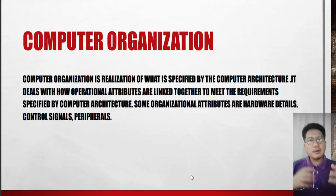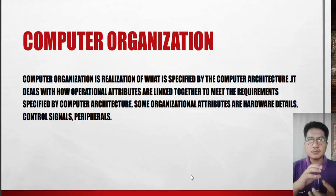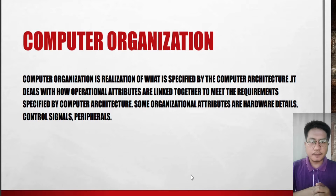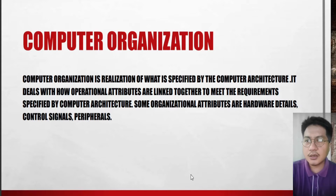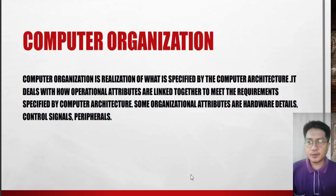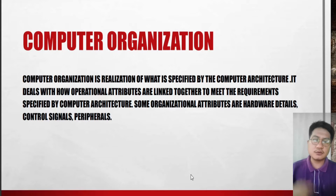Or inside your motherboard, we have the hard disk, we have the random access memory, and the central processing unit, the chip, the bridges — how they are actually connected to each other, how they are being linked. Some organizational attributes are hardware details, control signals, and peripherals. Those things are under computer organization.